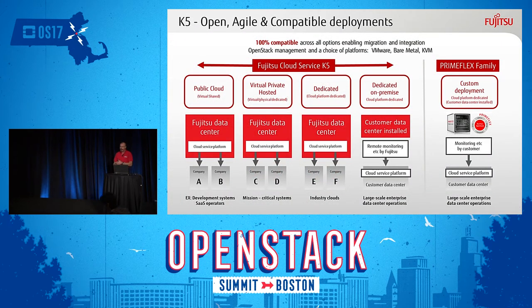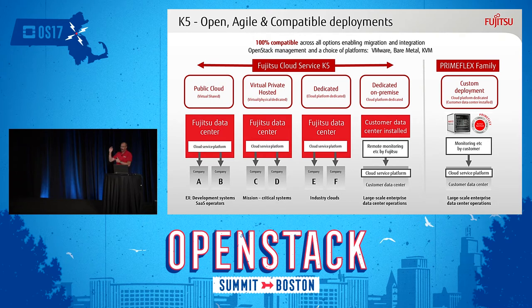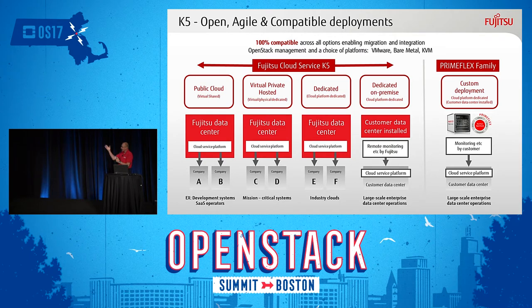We sell it in different flavors. You can get a pure public cloud option or a virtual private hosted option, where we dedicate blades just to you so you're not sharing a server with other people for more security. You can also get a dedicated K5 in our data center — that's your private cloud, we operate it, but you just consume it. Or we could do the same thing in your data center, where Fujitsu owns the infrastructure and you buy it like a public cloud service. We also sell the building blocks to build cloud services, so if you want to build your own OpenStack cloud service, we have a range of hardware, software, and partnerships to deliver cloud services.